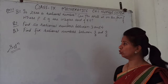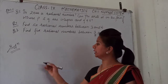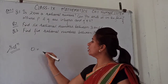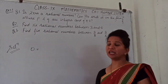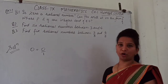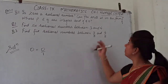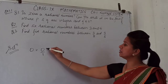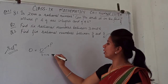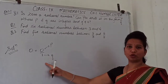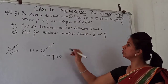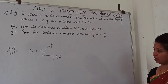I have to tell you about the properties. If we put 1 in the denominator, this is the P by Q format. 0 is taken as P and 1 is taken as Q. Q is not equal to zero, so we have to confirm that 0 is a rational number.